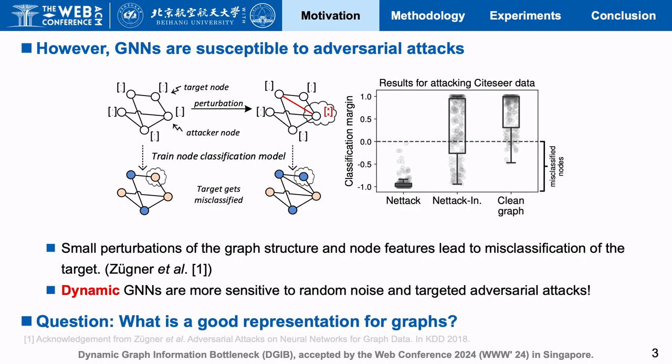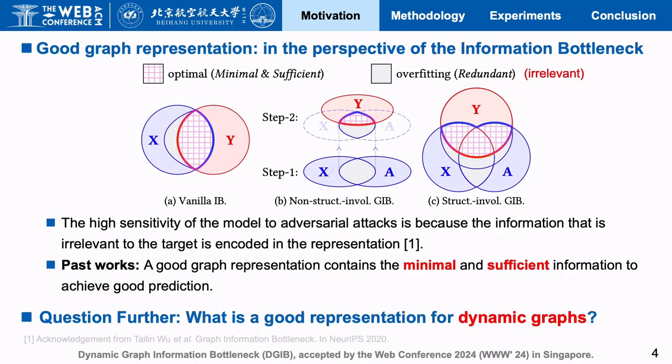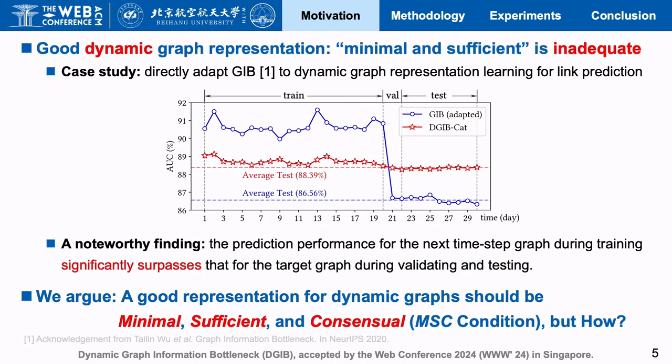So what is a good representation for graphs? Some prior works answer this question from the perspective of the Information Bottleneck (IB) theory. They think a good representation contains minimum sufficient information to achieve good prediction. But is it the same standard for dynamic graphs? We conducted a case study, and the noteworthy finding demonstrated that the minimum sufficient standard is inadequate. We argued that a good representation for dynamic graphs should be minimal, sufficient, and consensual — we call it the MSA condition.